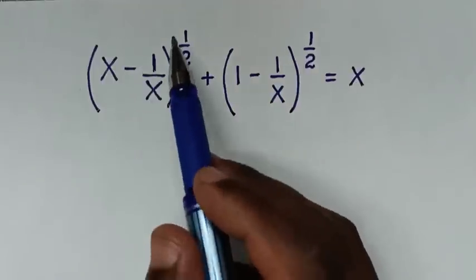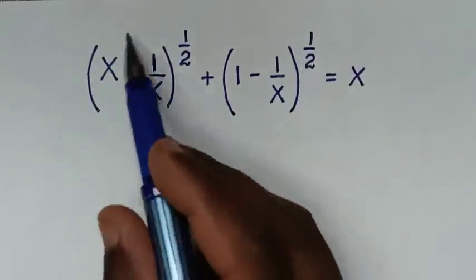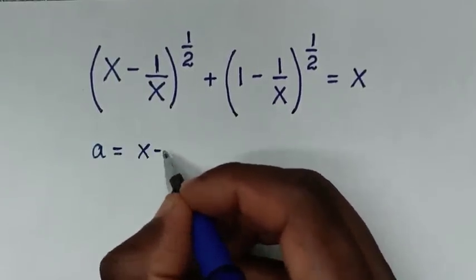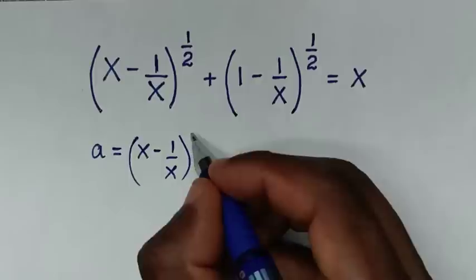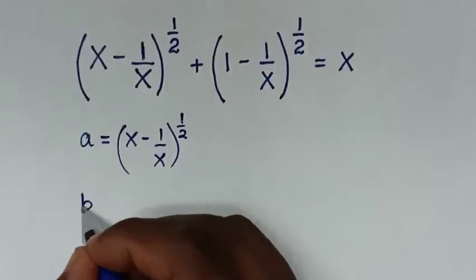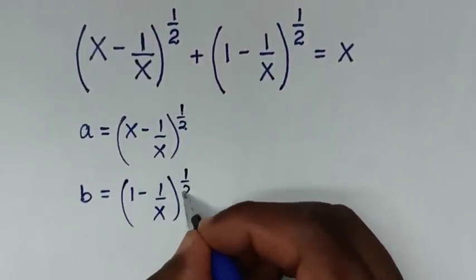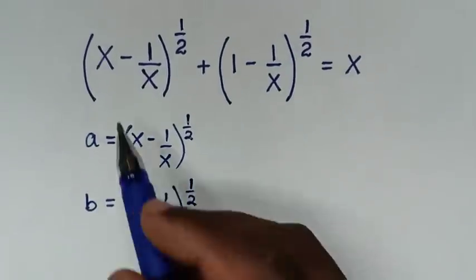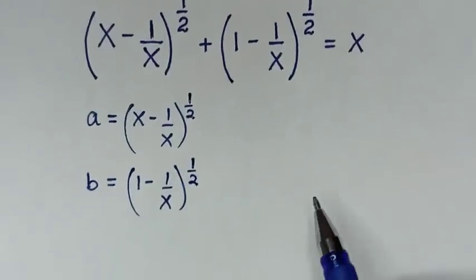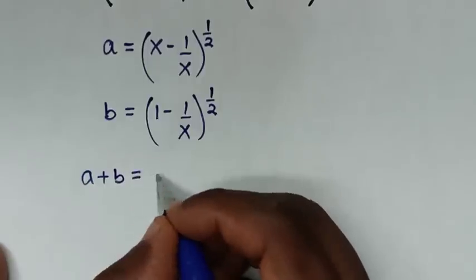In the first step, we will let the first term as a and the second term as b. So a is equal to (x minus 1 over x) to the power of a half, and b is equal to (1 minus 1 over x) to the power of a half. Since a plus b equals x, we get our first equation: a plus b is equal to x.